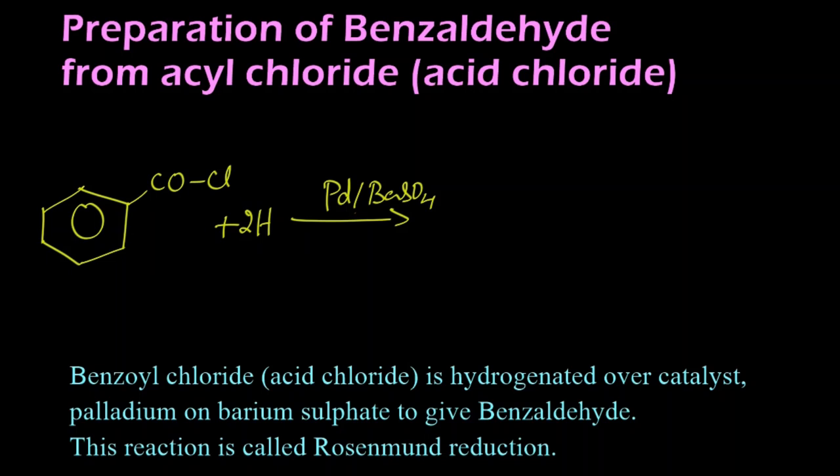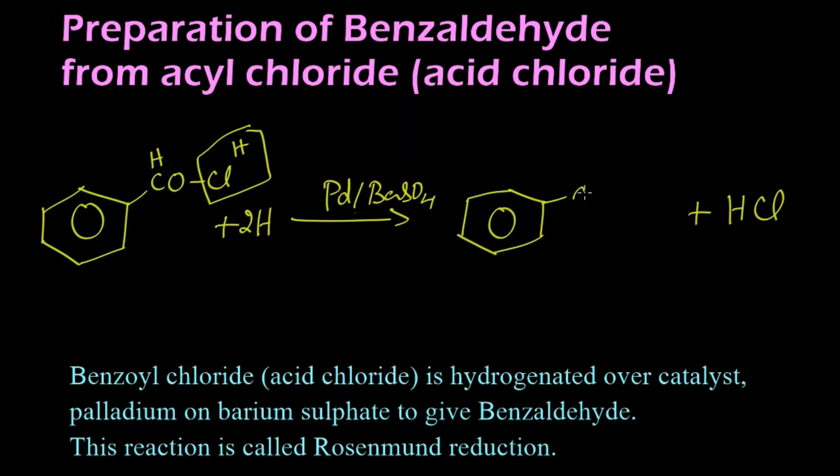What happens is: two hydrogens — one hydrogen will get attached to this carbon, and the other hydrogen with this chlorine will get eliminated as HCl. The remaining thing we get is the benzene ring, where to the carbon, when hydrogen is attached, there is already an oxygen.